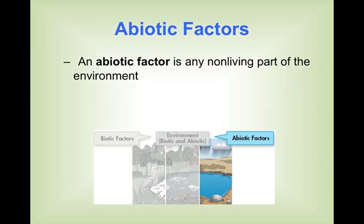An abiotic factor is anything that is a non-living part of the environment. All of the living organisms are gone from this picture — it looks very barren. It shows the weather, the dirt, the water, the rocks, but there's nothing alive there. That's because abiotic factors are non-living things that have never been living and were not generated by something that was living. Rocks, water, and soil are all abiotic factors.